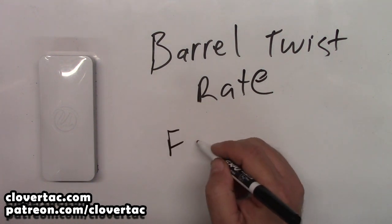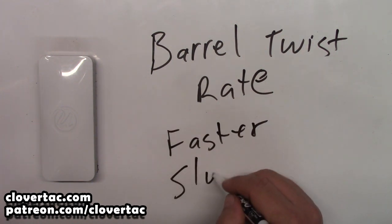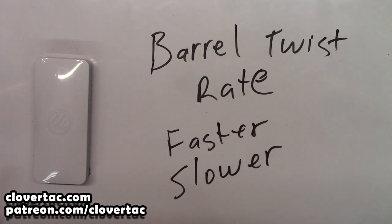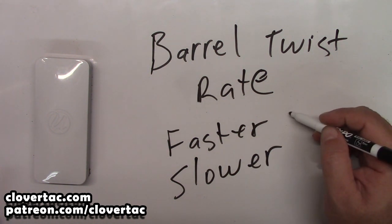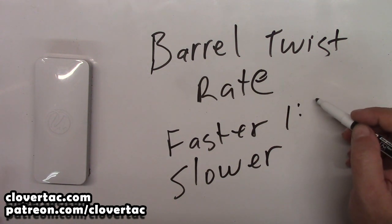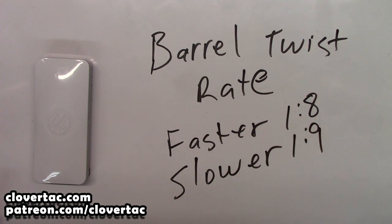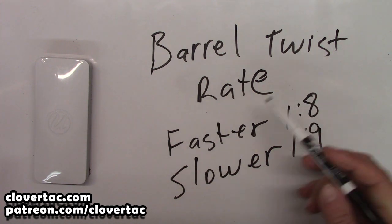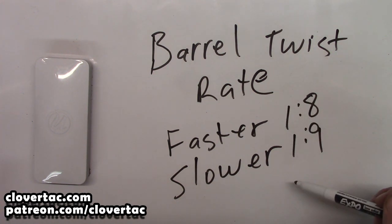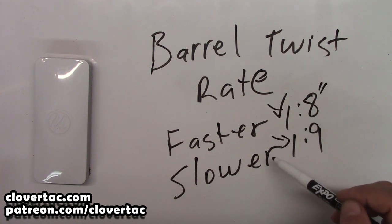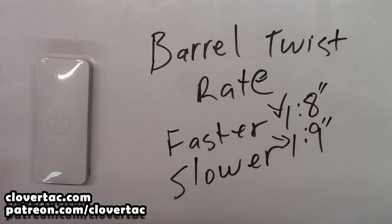Now where a lot of people get hung up is when they start talking about faster or slower twist rates. And that's actually a fairly simple concept to grasp. A one-in-eight twist is going to be faster than a one-in-nine twist. The reason for that is really simple — it's right in the numbers. You're completing one revolution in just eight inches of barrel, where that same revolution here takes you nine inches of barrel.